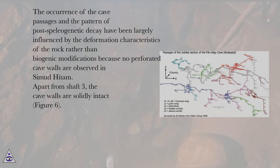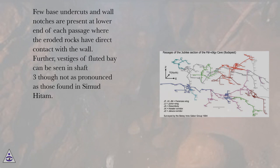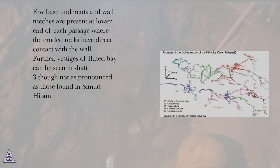The occurrence of the cave passages and the pattern of post-speleogenetic decay have been largely influenced by the deformation characteristics of the rock rather than biogenic modifications, because no perforated cave walls are observed in Simut Hatam. Apart from shaft 3, the cave walls are solidly intact (figure 6). Few base undercuts and wall notches are present at the lower end of each passage where the eroded rocks have direct contact with the wall. Further, vestiges of fluted bay can be seen in shaft 3, though not as pronounced as those found in Simut Hatam.